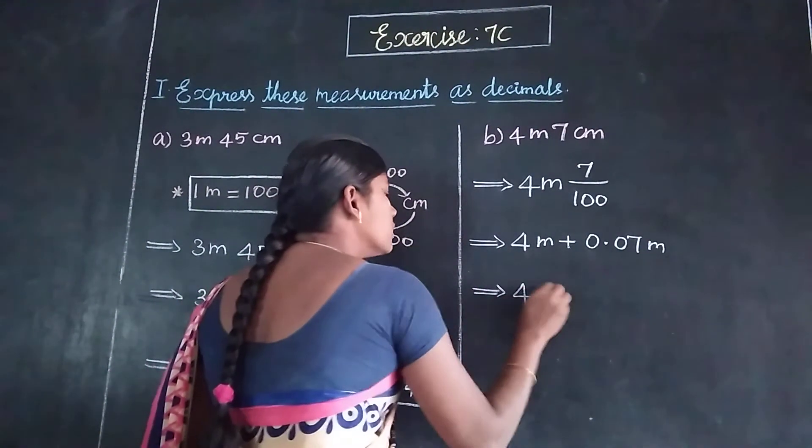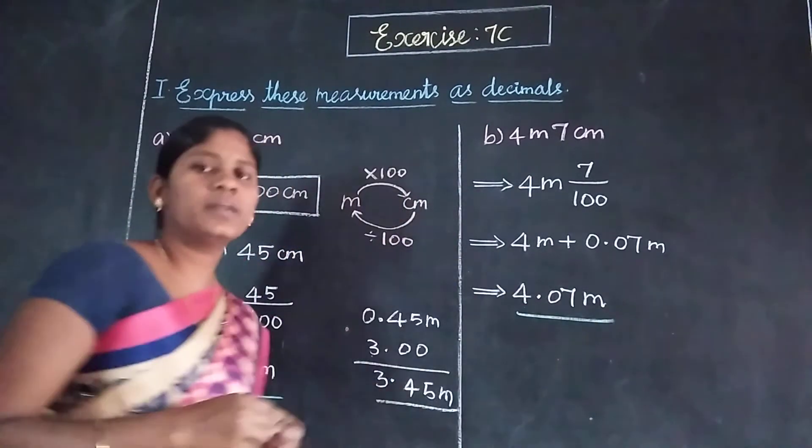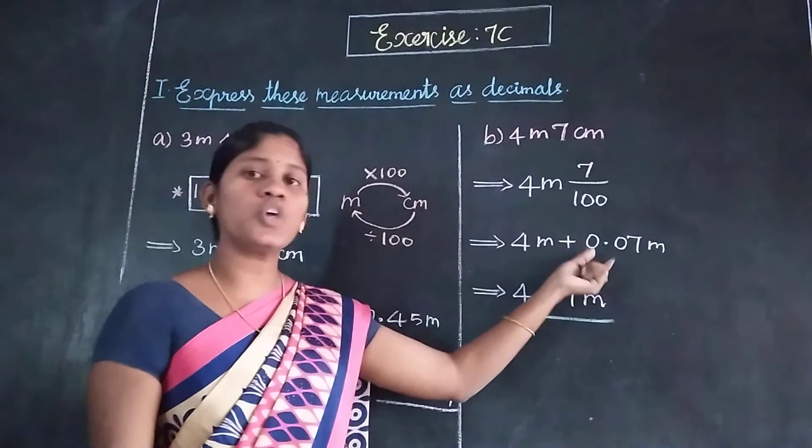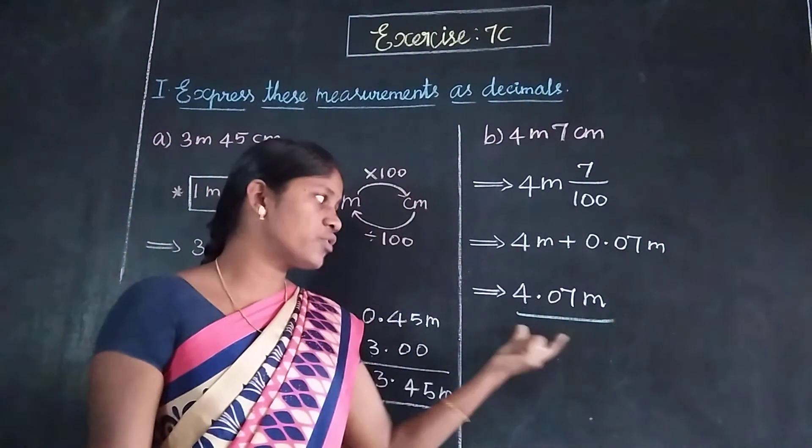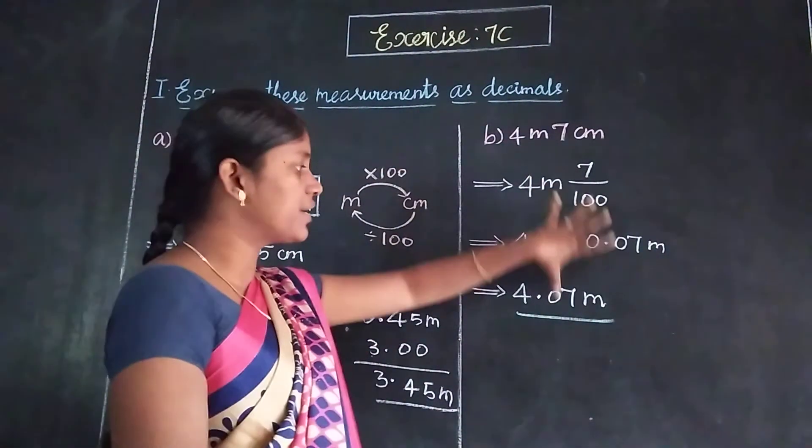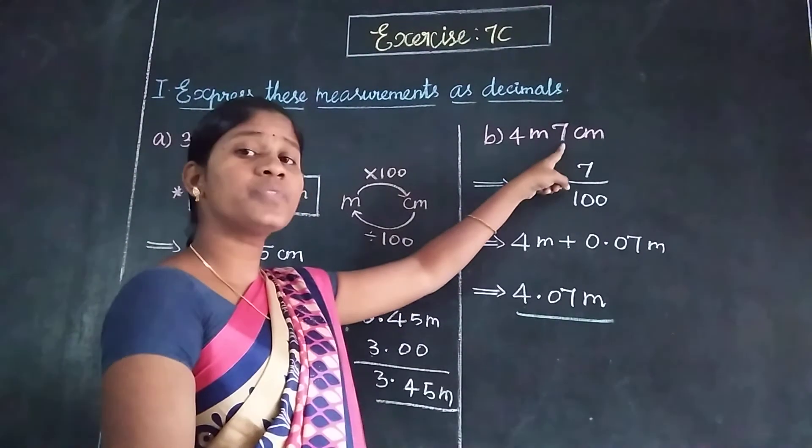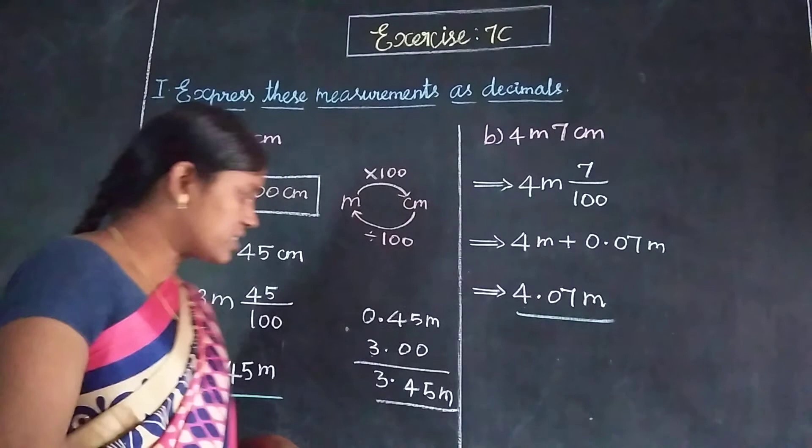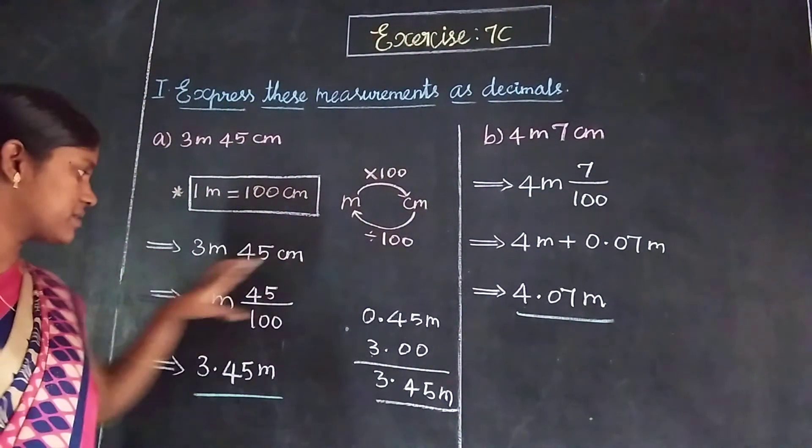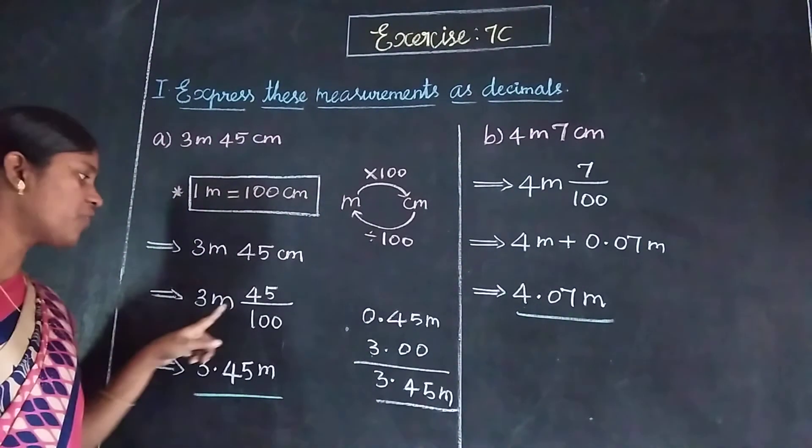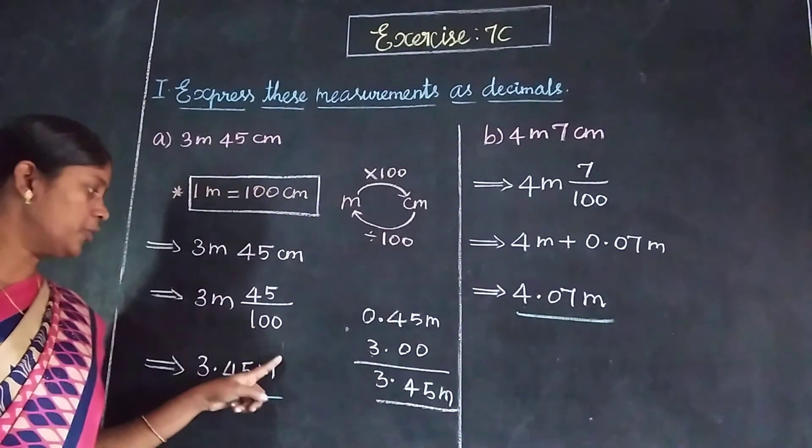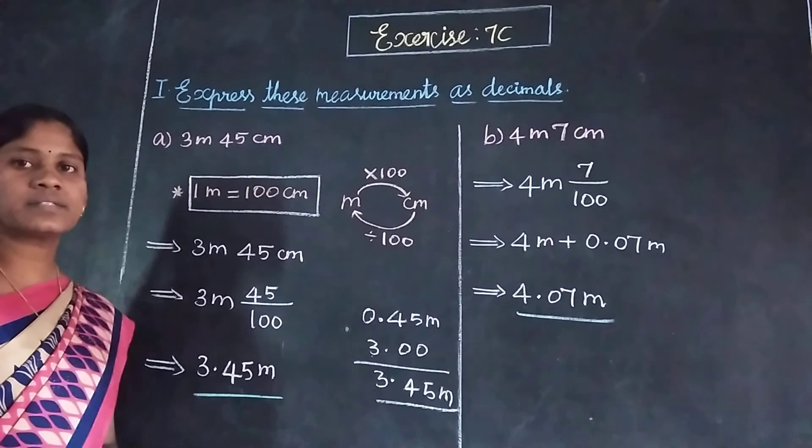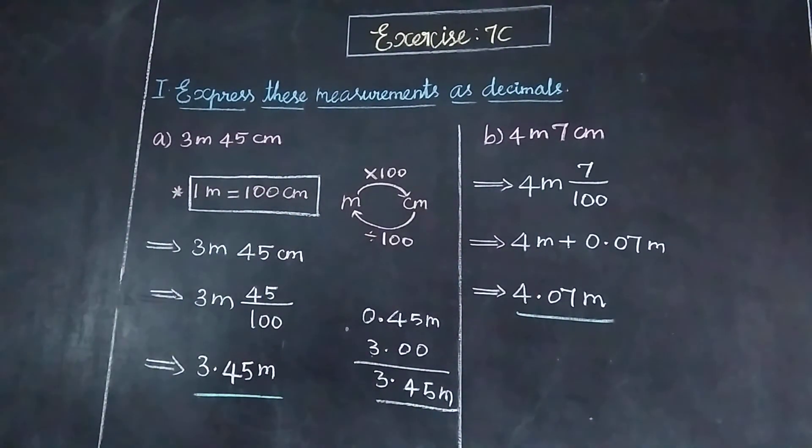4 meters plus 0.07 meters equals 4.07 meters. Since 1 meter equals 100 centimeters, 7 centimeters becomes 0.07 meters directly. So we can write 3.45 meters for 3 meters 45 centimeters. Thank you students.